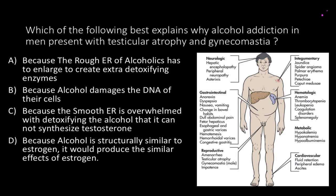Time for some review questions. Which of the following best explains why chronic alcoholism in men tends to present with testicular atrophy and gynecomastia? Testicular atrophy means the testicles shrink — remember the testicles synthesize steroid hormones like testosterone. Gynecomastia is the development of breast tissue in men. The answer is C: the smooth endoplasmic reticulum is overwhelmed with detoxifying the alcohol such that it cannot synthesize testosterone.